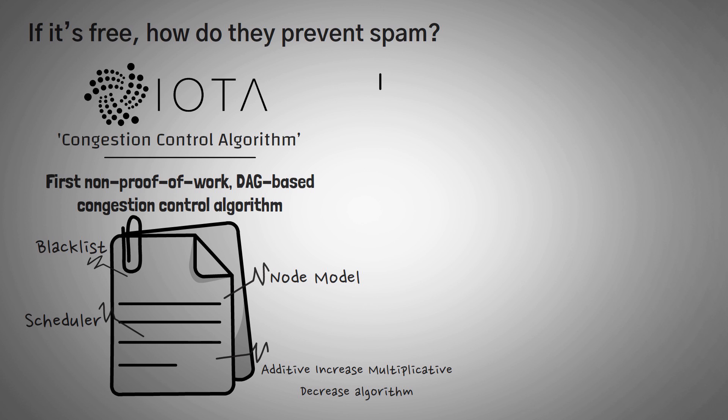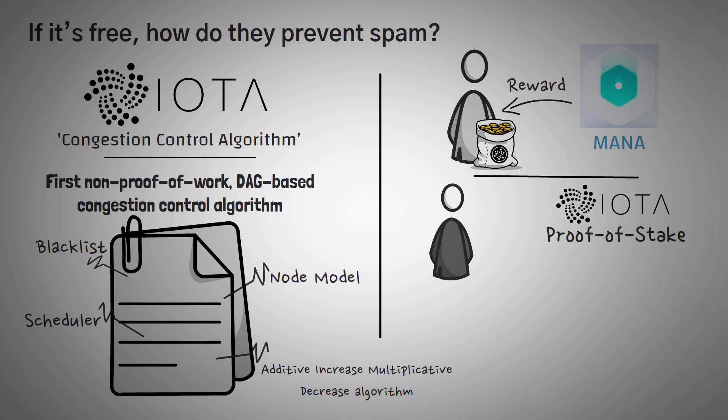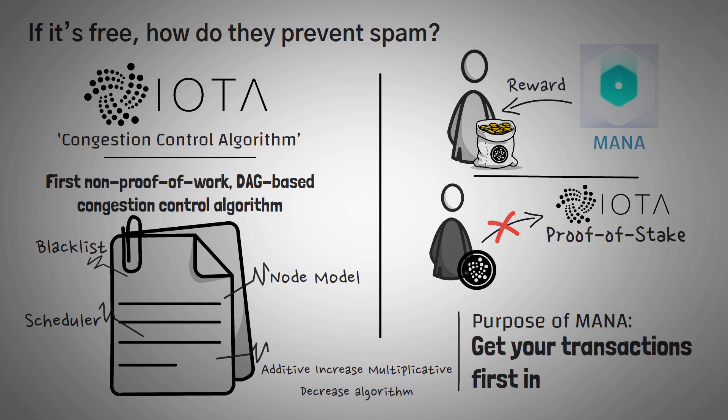Also in the future, IOTA will rely more on something called MANA. MANA is a virtual token that you earn by having and holding the native IOTA token. Eventually whenever they remove the coordinator, IOTA will switch to something that is similar to proof-of-stake, except you don't have to stake your coins to help validate. Instead, like I said, you earn MANA the longer that you delegate your coins, and you can use that MANA to get your transactions first in line. Now, if the network isn't congested, you don't really need MANA, but if it is, people who have a lot of IOTA and have held it for a while to earn MANA will get priority.